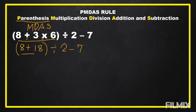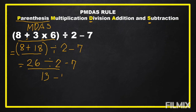Next, we add inside the parentheses: 8 plus 18 equals 26. Then we bring down divided by 2 minus 7. After that, we have division and subtraction remaining, and division comes first before subtraction. So we divide: 26 divided by 2 equals 13. Then we bring down minus 7. This is the last operation: 13 minus 7 equals 16. That is our final answer.